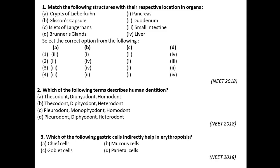Question number four: Which cells of crypts of Lieberkühn secrete antibacterial lysozyme? The answer is parietal cells. Parietal cells present in the crypts of Lieberkühn contain acidophilic cells and they produce the lysozyme enzyme.